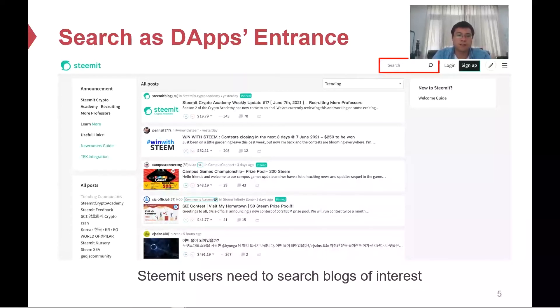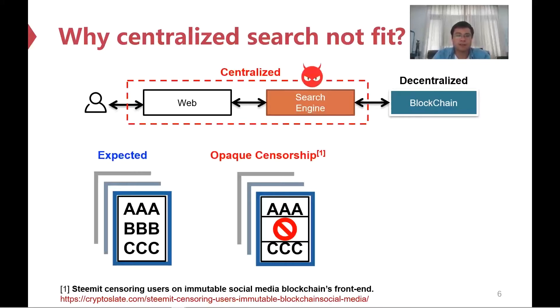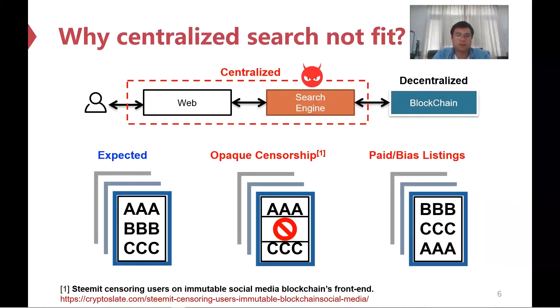We found that search plays an extremely important role in these DApps for users. However, today's DApps typically rely on centralized search, which poses serious threats to DApp users. The first threat is opaque censorship. It is reported that Steemit developers have been known to prevent users' blocks from appearing on the front-end site. The second threat is paid listing or search bias. Search engine owners can be paid to promote their listings to benefit themselves financially. Both censorship and bias harm DApps' users' interests and violate the spirits of decentralization, which are transparency and fairness.